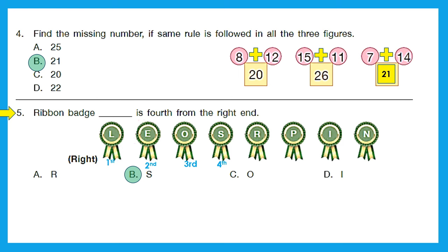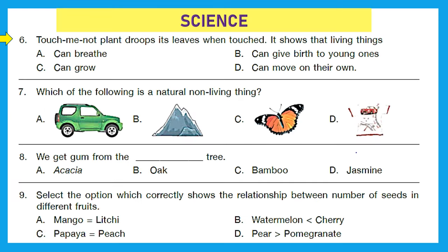Next section is science. Question 6: the touch-me-not plant droops its leaves when touched. This shows that living things can breathe, can give birth to young ones, can grow, or can move on their own. The leaves of the touch-me-not plant droop when touched — that shows that living things can move on their own. Option D is the right answer.